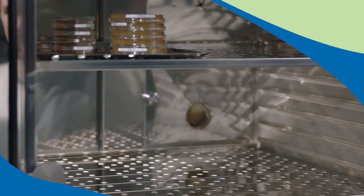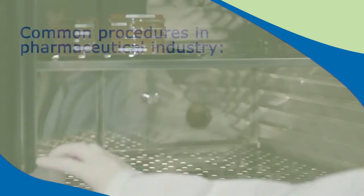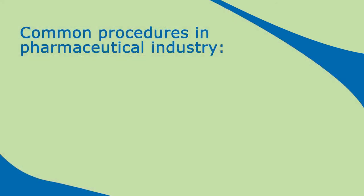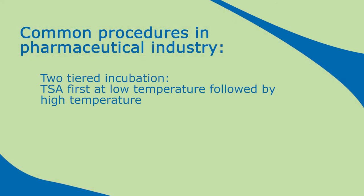Typical procedures in the pharmaceutical industry include a two-tiered incubation, meaning to incubate TSA at a low temperature first, followed by a high temperature. For instance, start with 20 to 25 degrees Celsius, followed by 30 to 35 degrees Celsius.